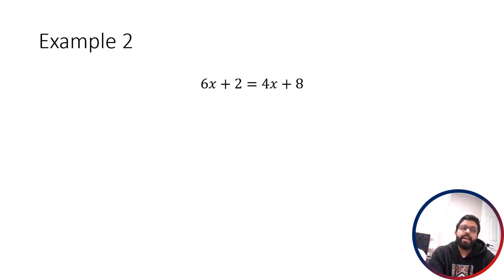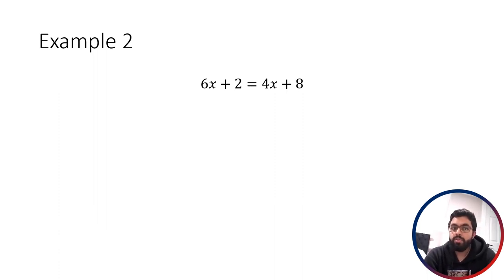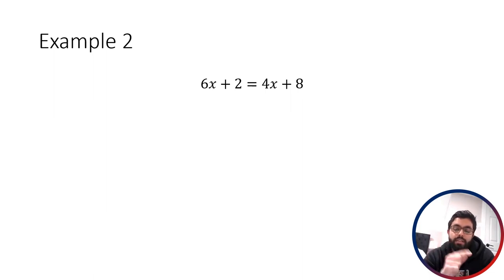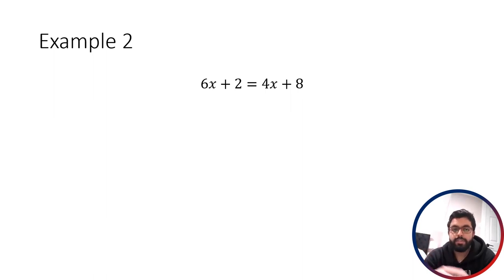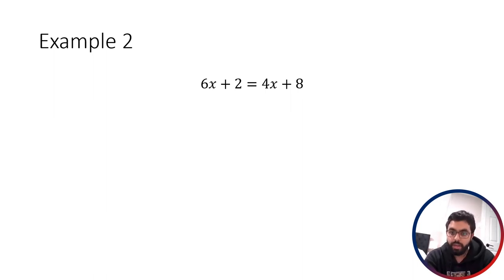Now here's another example where we're upping the difficulty a little bit. We're still working with one variable — just the letter x — but the letter x is showing up multiple times. You might say that's two variables, but two variables would be two different letters, like x in one spot and y in another. Those are a different beast — not impossible to solve, but a little bit harder than when you've got exactly the same letter showing up again and again.